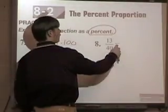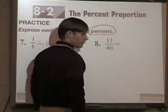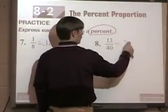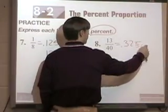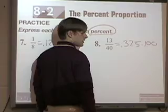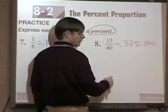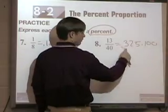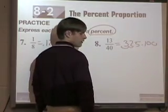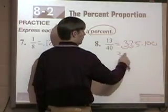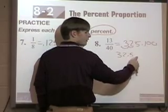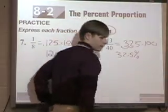All right, Kevin, what's 13 over 40 as a decimal? 0.325. Okay. And then I multiply it times 100 to make it a percent. What's that equal? Look, Kevin. Did you move the decimal 2 to the right? What is it? 32.5 what? Percent. Very good.